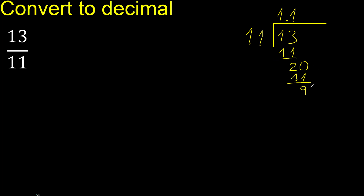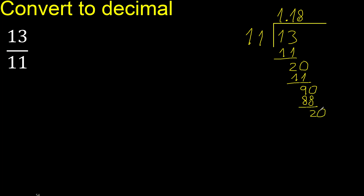Always complete with 0. 0 point. 90. 11 multiplied by 8 is 88. Subtract, complete. Always complete with 0. 0 point. 20. 11 multiplied by 1 is 11. Subtract, complete. 90.